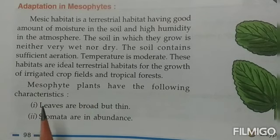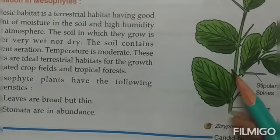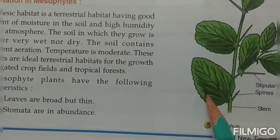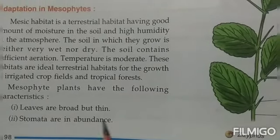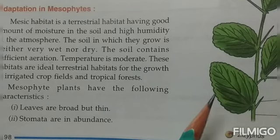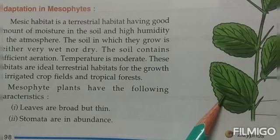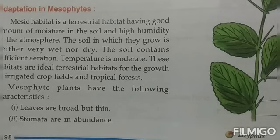Mesophyte plants have the following characteristics. Leaves are broad but thin — broad meaning quite wide, but thin when viewed from the side. Stomata are present in abundance on both the upper and lower surfaces of the leaf. Stomata are the small openings on the leaf surface which help in the exchange of gases as well as in throwing out excess water absorbed by the roots — that process is called transpiration.